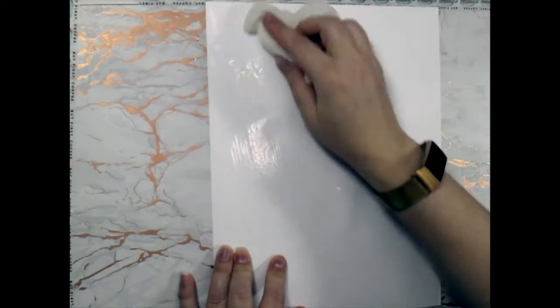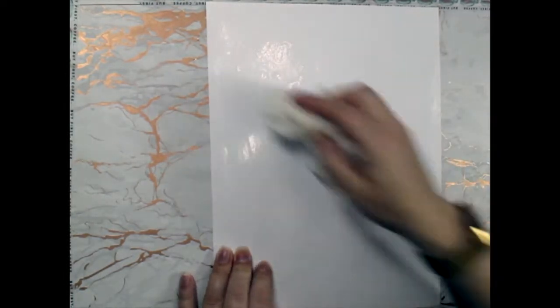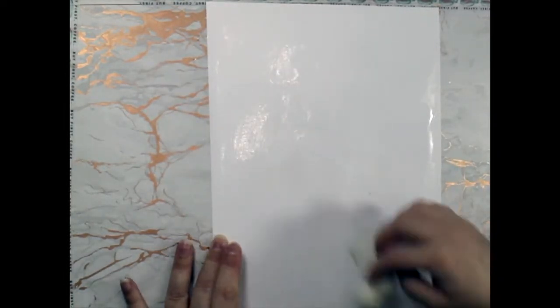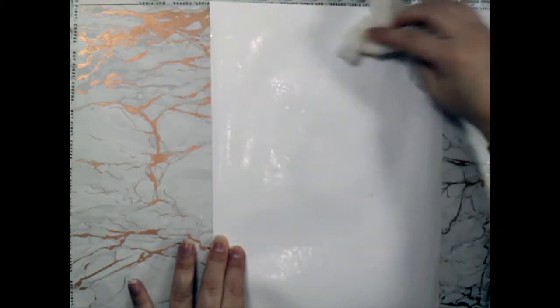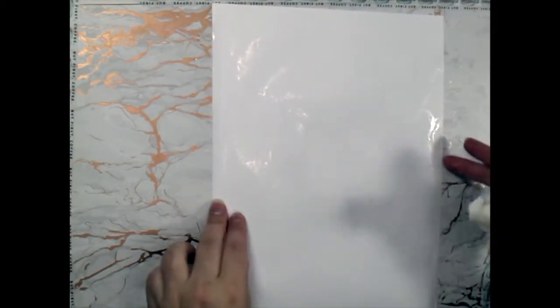I'm going to wet a paper towel so it gets super shiny and wet for a minute and I'm going to make sure the whole surface is nice and shiny.